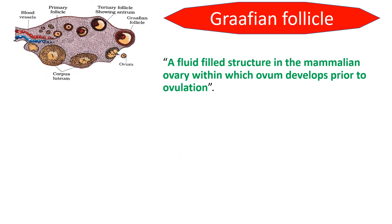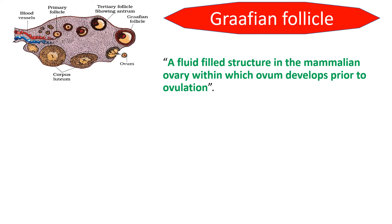What is the Graafian follicle? It is a fluid-filled structure in the mammalian ovary within which the oocyte develops prior to ovulation. The Graafian follicle is a type of follicle developed from the tertiary follicle.